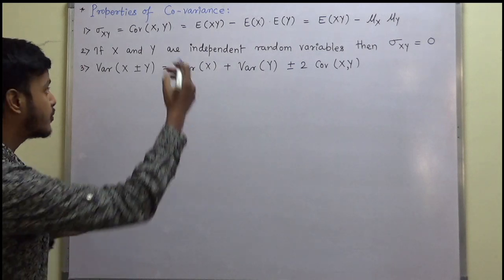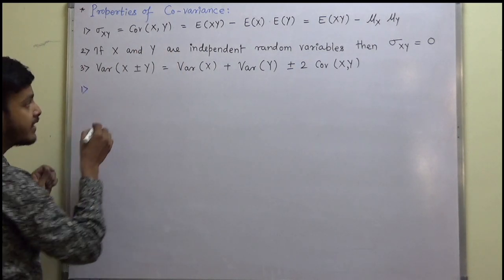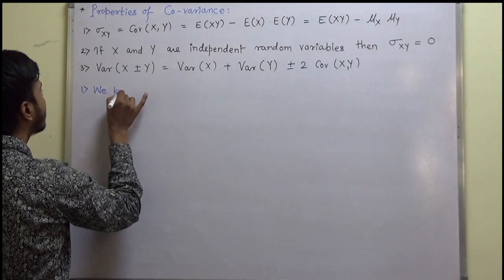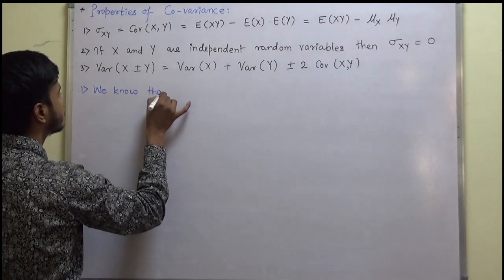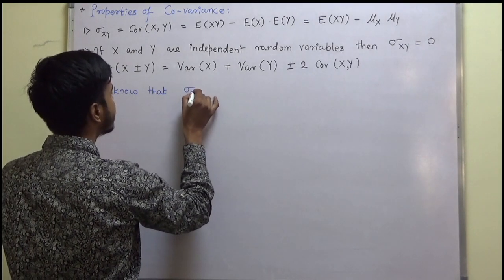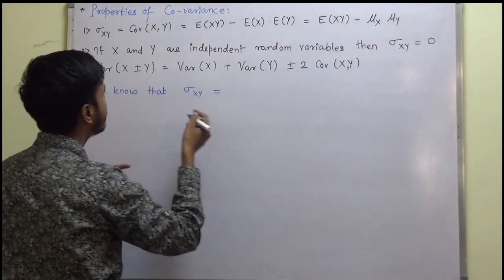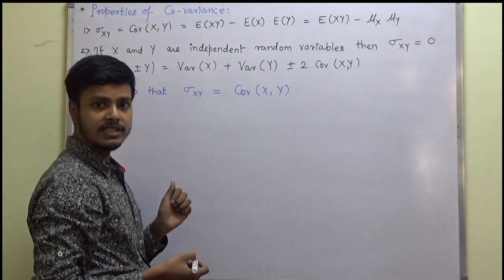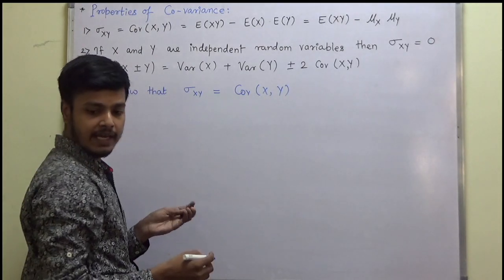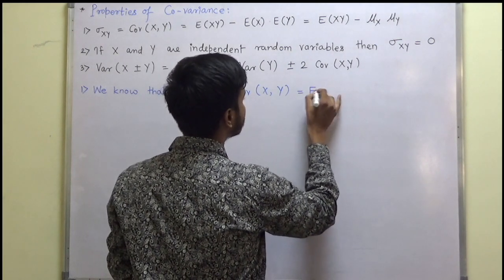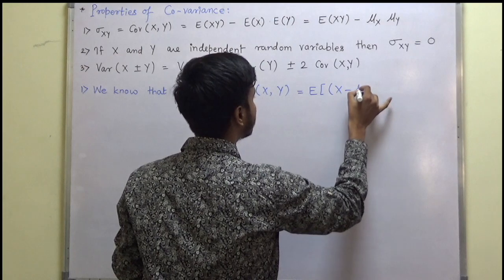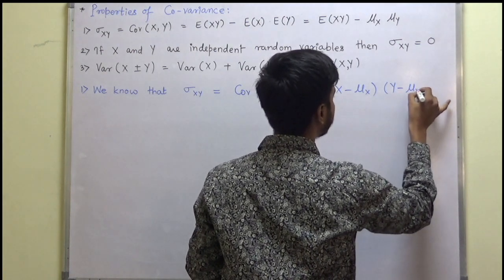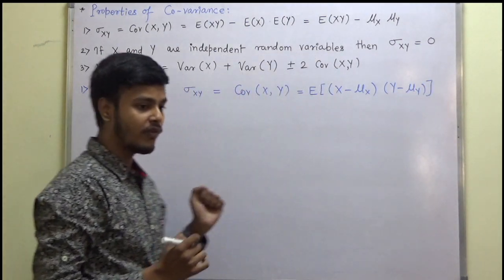Let us first see the proof of the first property. The first property concerns σ_xy. We know that σ_xy, that is the covariance of xy, can be written by definition in terms of expectation as: covariance of xy equals expectation of (x minus μx) into (y minus μy). That is from the definition of covariance.